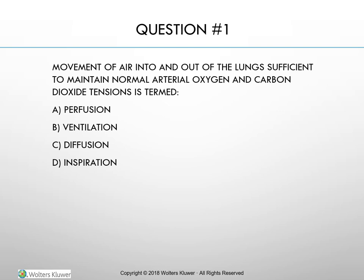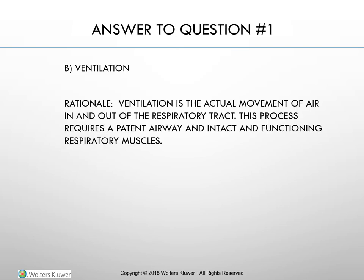Practice question: Movement of air into and out of the lungs sufficient to maintain normal arterial oxygen and carbon dioxide tensions is termed: A) perfusion, B) ventilation, C) diffusion, or D) inspiration. The answer is B — ventilation. Ventilation is the actual movement of air in and out of the respiratory tract, requiring a patent airway and intact and functioning respiratory muscles.